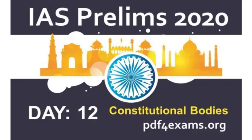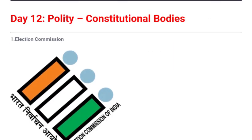Starting with constitutional bodies — by the name itself it is clear: a body whose name has been mentioned in our Constitution under some article is called a constitutional body. Since they are constitutional bodies, they derive power directly from the Constitution. As we have seen in the case of our judiciary, all courts derive power from the Constitution and were not answerable to any state or union legislature or executive, because that body needs to be independent to perform its function properly.